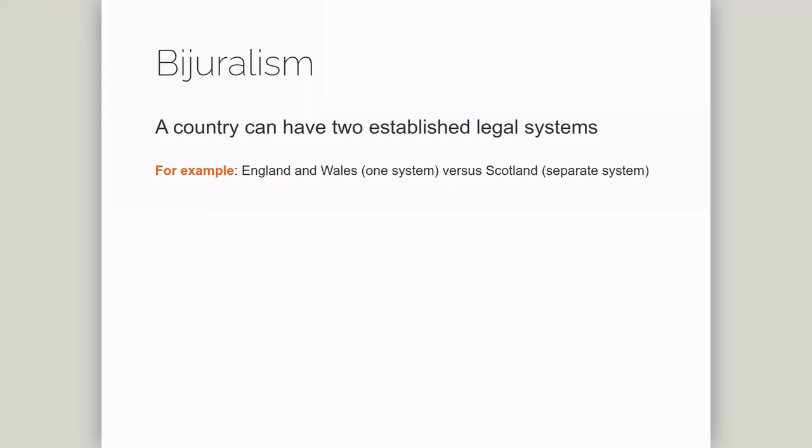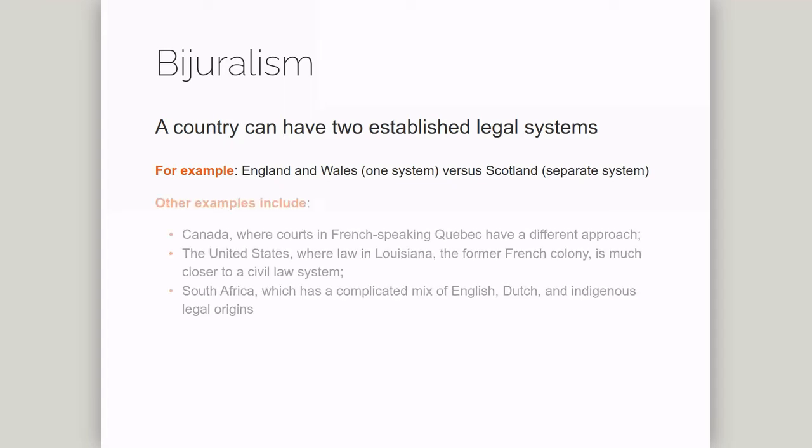Other bi-jural systems include Canada, where courts in French-speaking Quebec have a different approach; the United States, where law in Louisiana, the former French colony, is much closer to a civil law system; and South Africa, which has a complicated mix of English, Dutch, and Indigenous legal origins.